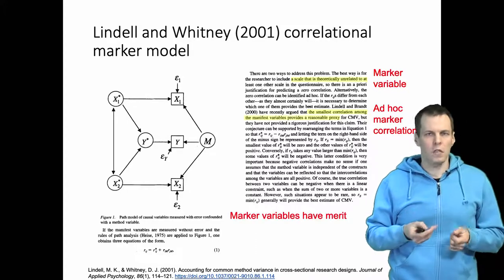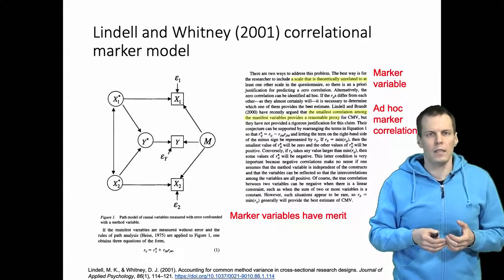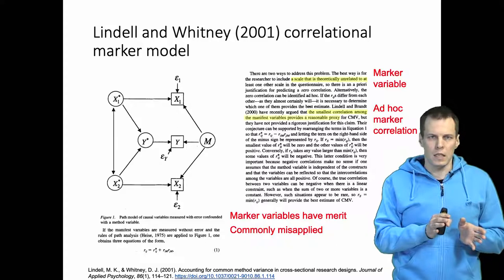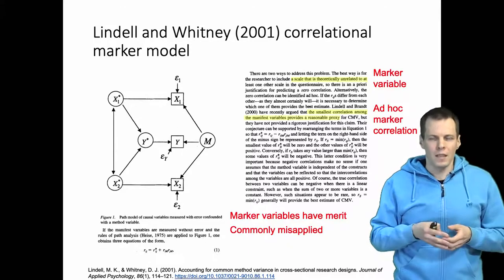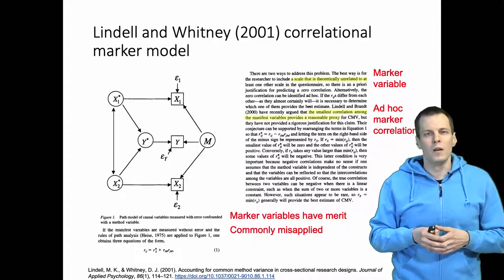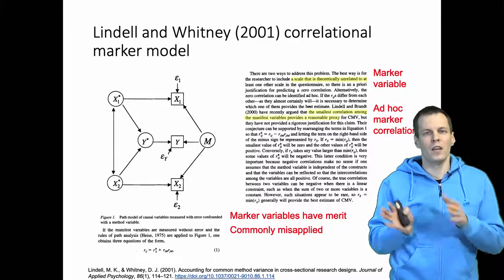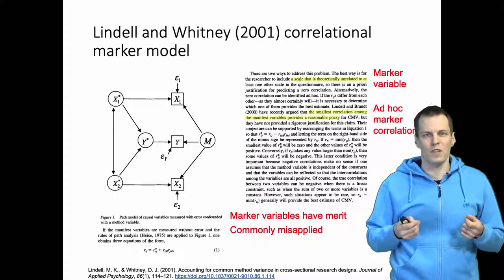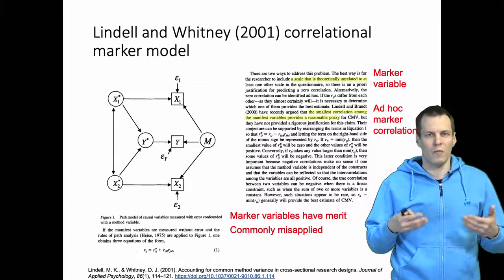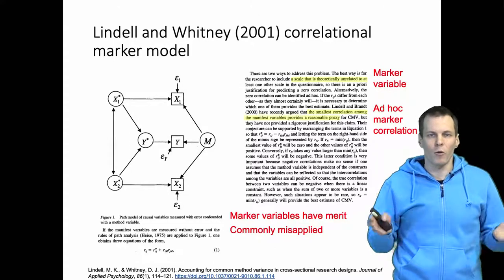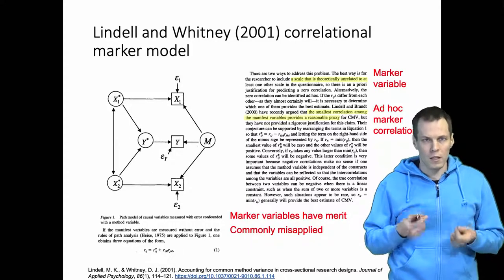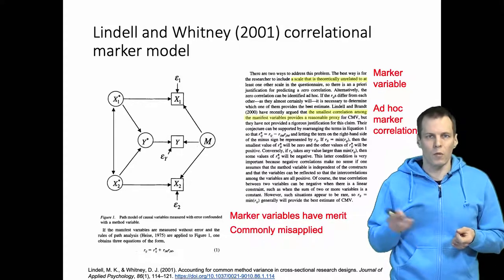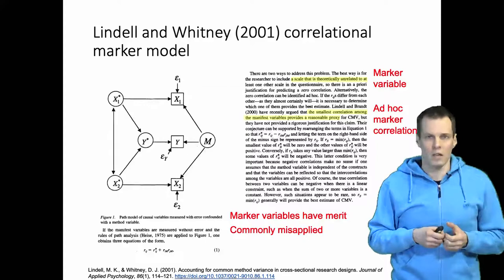Marker variables have some merits — this technique can be effective — but it has some limitations, and marker variables are commonly misapplied. One of the most common ways of misapplying this is choosing a marker that is not affected by the same source of bias as the items. For example, if you ask a person to rate things on a five-point scale and then ask them to report their age and use age as a marker, it's hardly true that responses about age would be affected by the same biases as rating scales about company performance or innovativeness. There are also misapplications that relate to statistical techniques, and some techniques recommended in the literature are questionable.